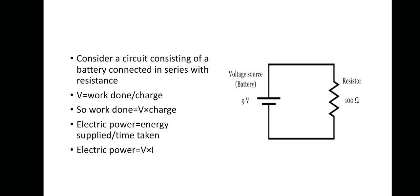Let us suppose that a small amount of charge, delta Q, moves from low potential to high potential through the battery. One side of the battery is at high potential and the other is at low potential. The positive charge will start to flow and pass through the resistor, dissipating energy as it goes from high to low potential.